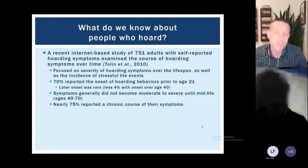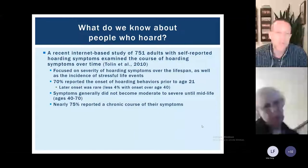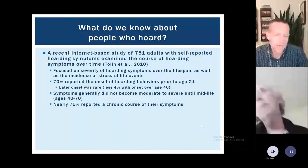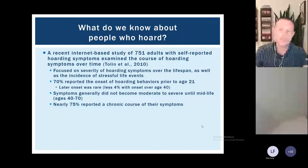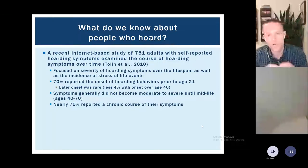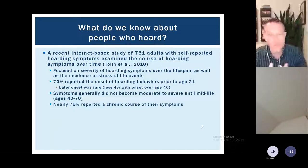Symptoms don't really become moderate to severe until mid-life — between 40 and 70. Three-quarters of people said symptoms were chronic, meaning once they started, they were really with them over the long haul. This was not a problem that for most people tended to go away on its own. For most people, this is something that sticks around until they get help.